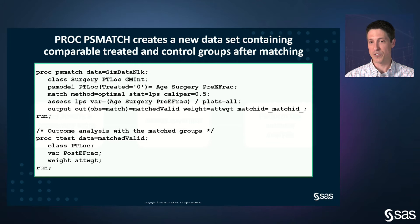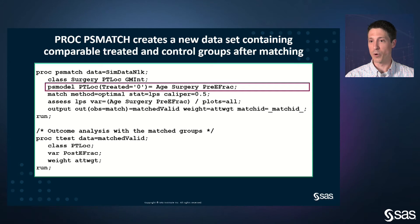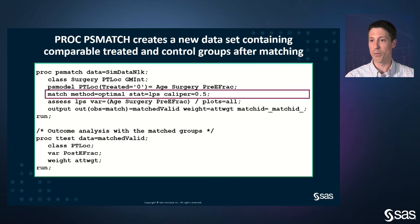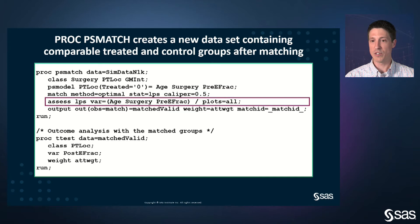Here's the syntax for PROC PS Match. The PS model statement is where you set up your propensity score model. Recall from the PROC CausalGraph analysis that there are three variables that must be included for statistical adjustment: age, surgery, and pre-EFRAC, which you specify in the PS model statement. You use the MATCH statement to specify that you are using propensity score matching. PROC PS Match uses logistic regression to fit a propensity score model, and for each observation in the treated group it finds a control group observation with a similar propensity score. You use the ASSESS statement to request tables and graphics to assess the quality of the matching analysis.